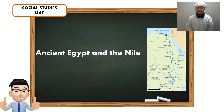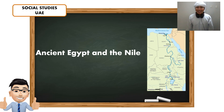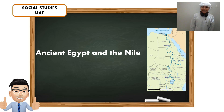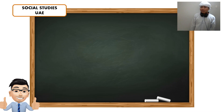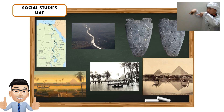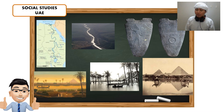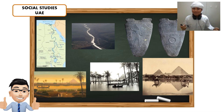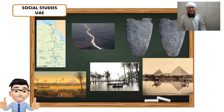Yesterday, we talked about the ancient Egypt and the Nile. Let's have a quick review about our lesson yesterday. Can you still remember these pictures? You can see there the armor plate. Narmer was the first king who ruled the whole Egypt. Still remember? Alright, good.